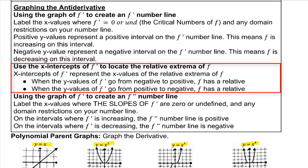When the y values of f prime go from negative to positive, then f has a relative minimum. And when f prime goes from positive to negative — where f goes from increasing to decreasing — f will have a relative max.